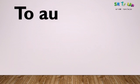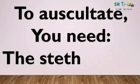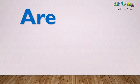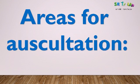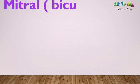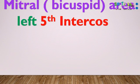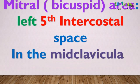In order to auscultate, you will simply need one piece of equipment called the stethoscope. There are specific areas where you will place the stethoscope to perform auscultation. The first area is the mitral or bicuspid area, located at the 5th intercostal space in the mid-clavicular line.